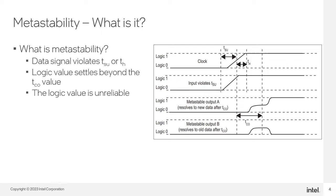This figure shows example metastable signals. The input signal transitions from a low state to a high state while the clock signal transitions, violating a register's TSU requirement. The data output signal examples start in the low state and go metastable, hovering between the high and low states. Output A resolves to the input data's new logic one state, while output B returns to the data input's original logic zero state. In both cases, the output transition to a defined one or zero state is delayed beyond the register's specified TCO. If the data output signal resolves to a valid state before the next register captures the data, then the metastable signal does not negatively impact system operation, and there is no design failure.